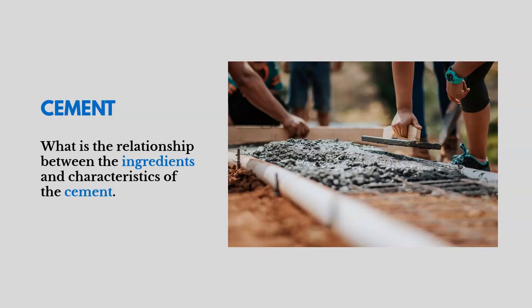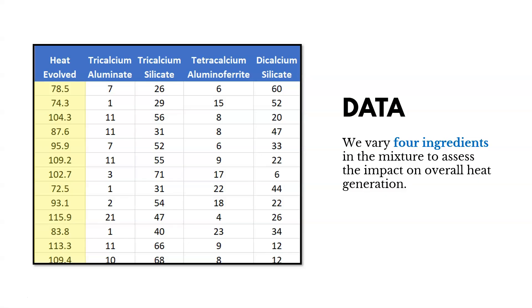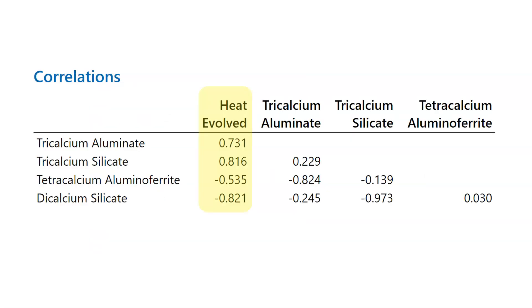Now let's look at another example involving cement. We want to understand the relationship between the ingredients of the cement and its characteristics. We vary four ingredients in the mixture to assess the impact on overall heat generation. On one side you see four ingredients of the cement, and on the other you see what's called heat evolved. We want to understand how these ingredients are related to heat evolved — a measurement or characteristic of the cement. We can generate a correlation matrix because we have more than two variables, and what's highlighted are the correlation coefficients of the relationships between the ingredients and heat evolved.